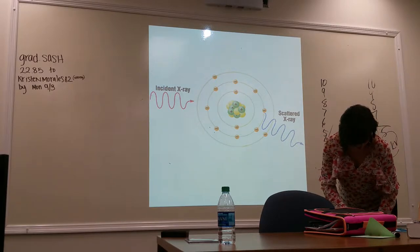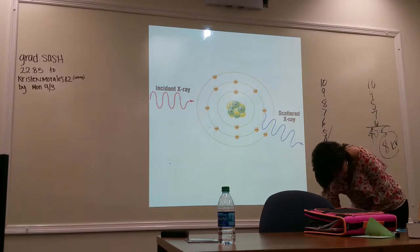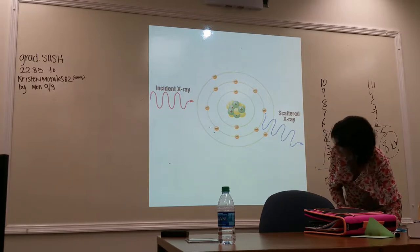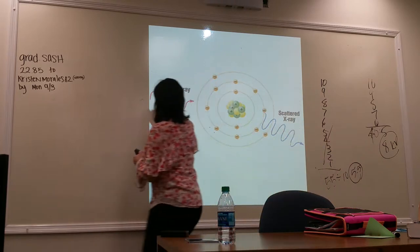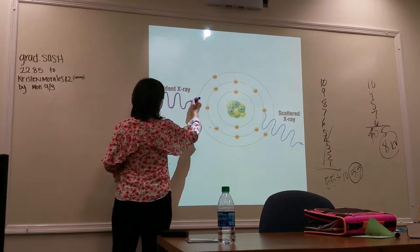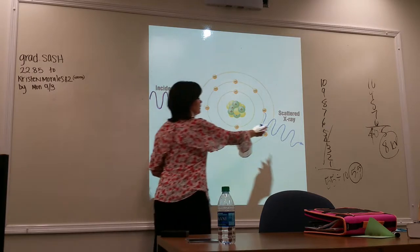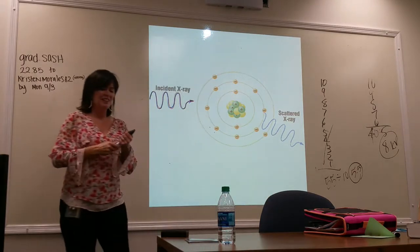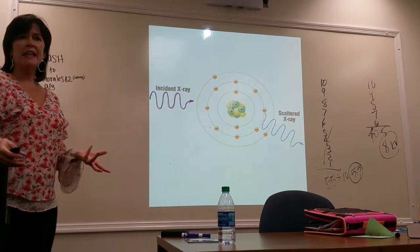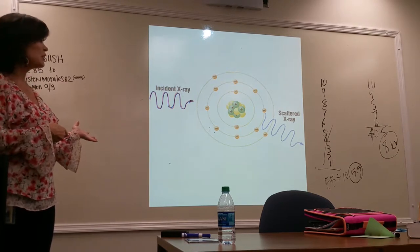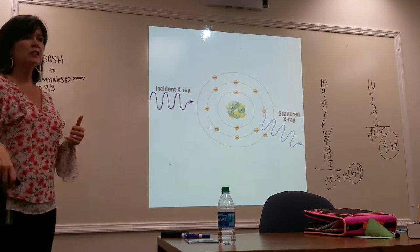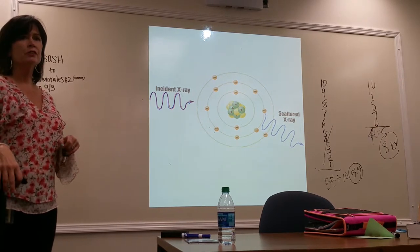Do you see an electron leaving its shell? No. All you see is the incident X-ray photon and the scattered X-ray. So, this is just scattered. I need to fix this.